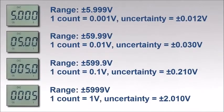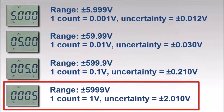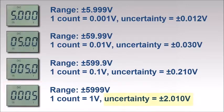At the highest range, the reading is 0.005, with one count equal to 1 volt. Applying the formula, the uncertainty in this case would be approximately plus or minus 2 volts, producing a measurement range of around 3 to 7 volts, orders of magnitude greater than our original uncertainty.